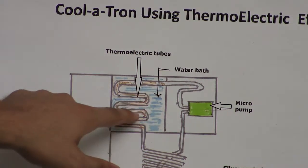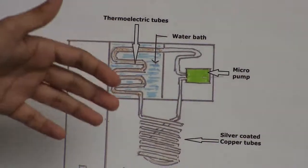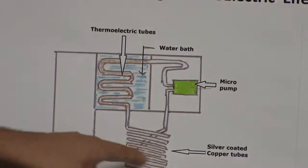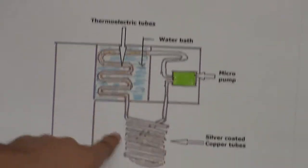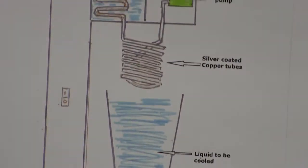These are thermoelectric tubes. The inner surface cools down while the outer surface heats up. This causes the coolant, which is water, to cool down. When this passes through this region, the cooling tubes cool down. Then this is immersed inside the beverage to cool it down.